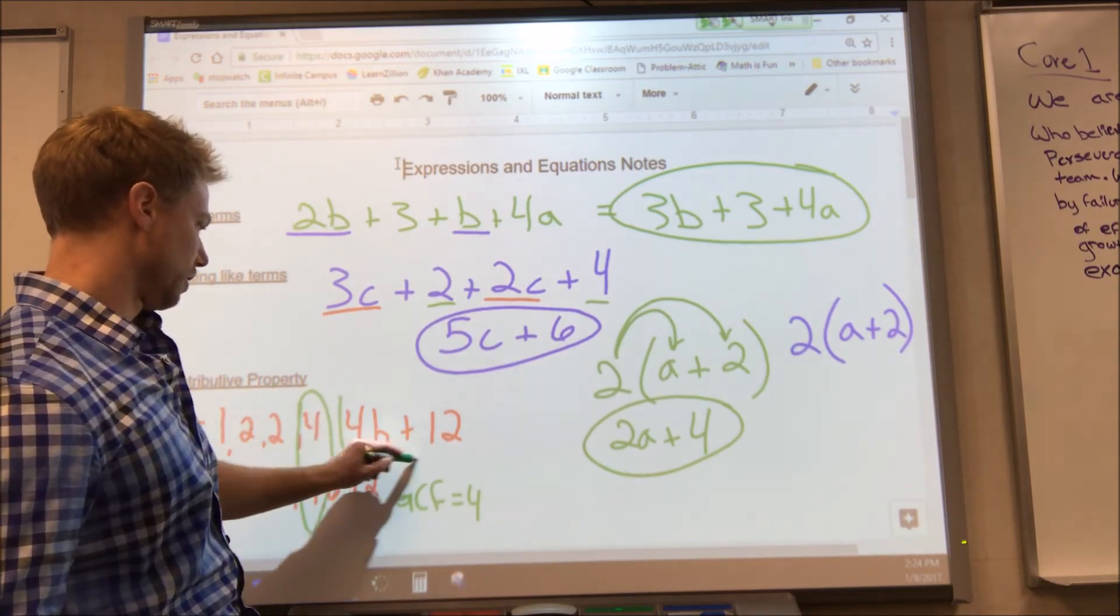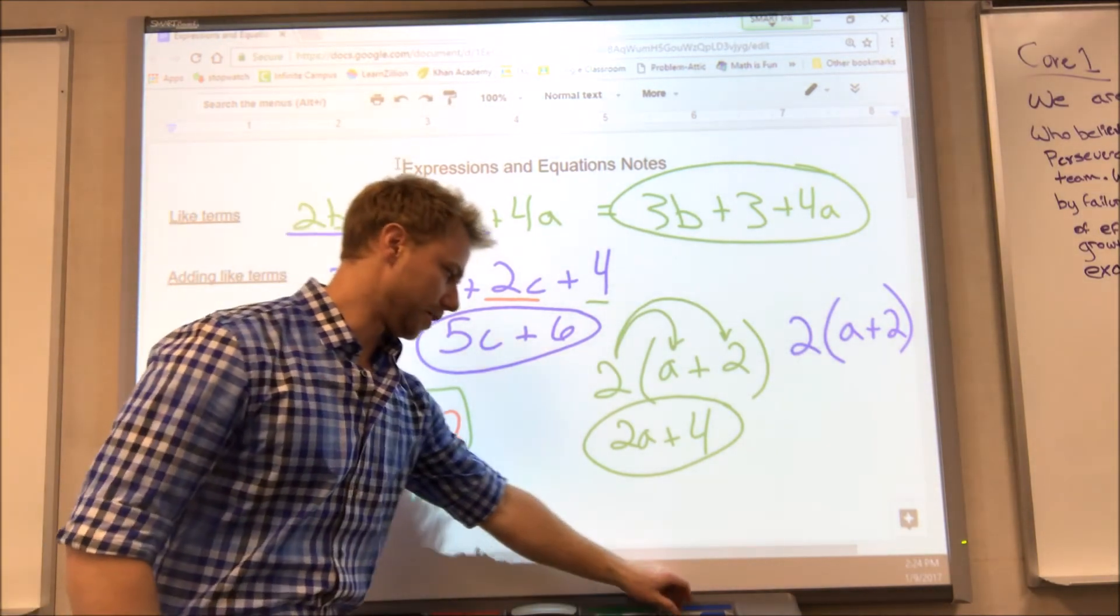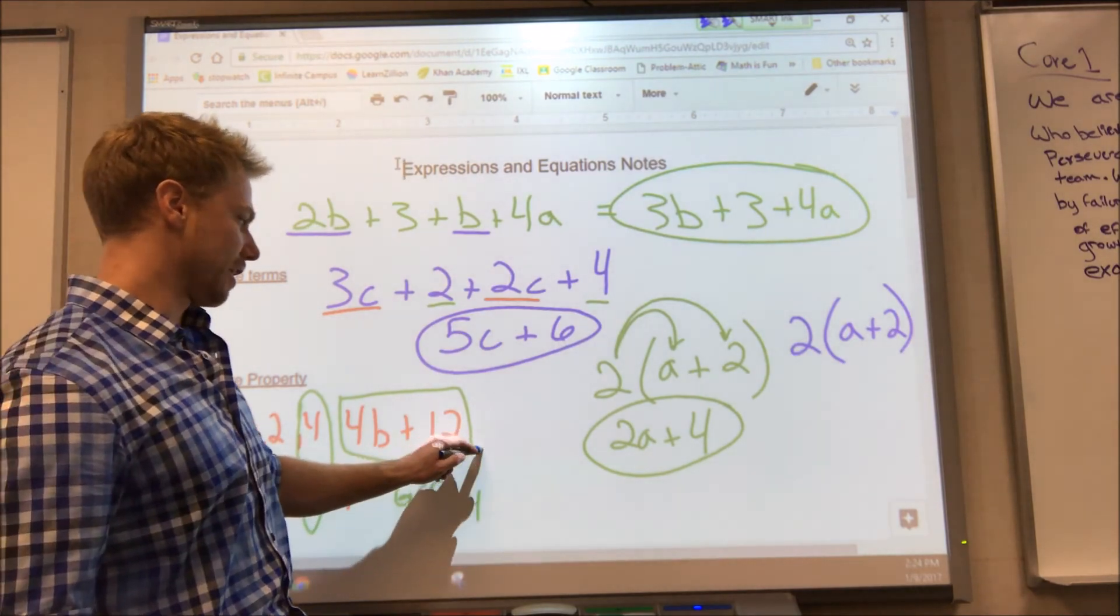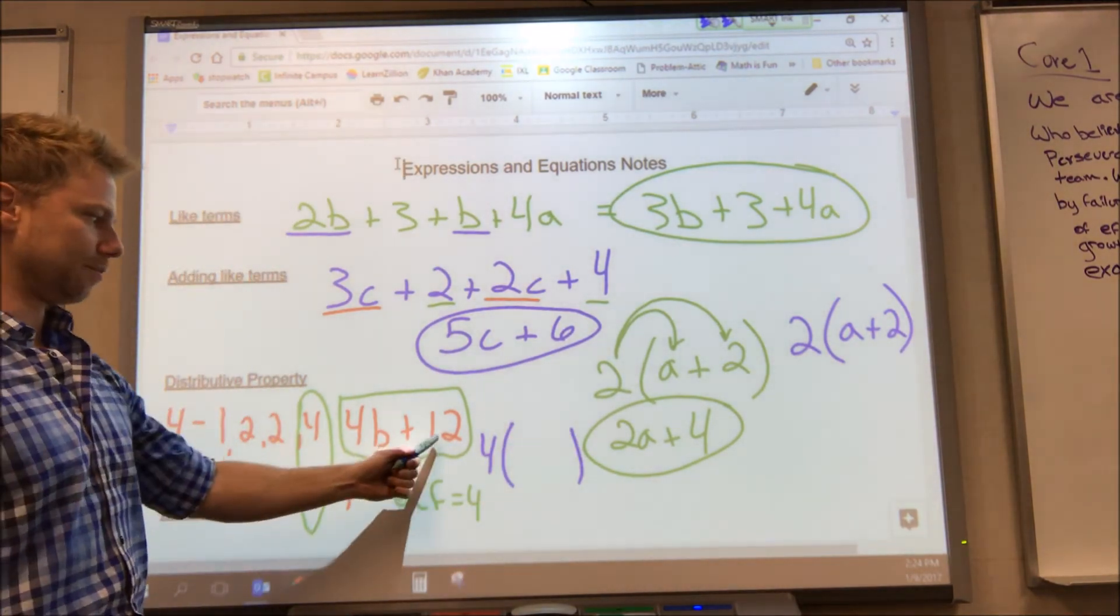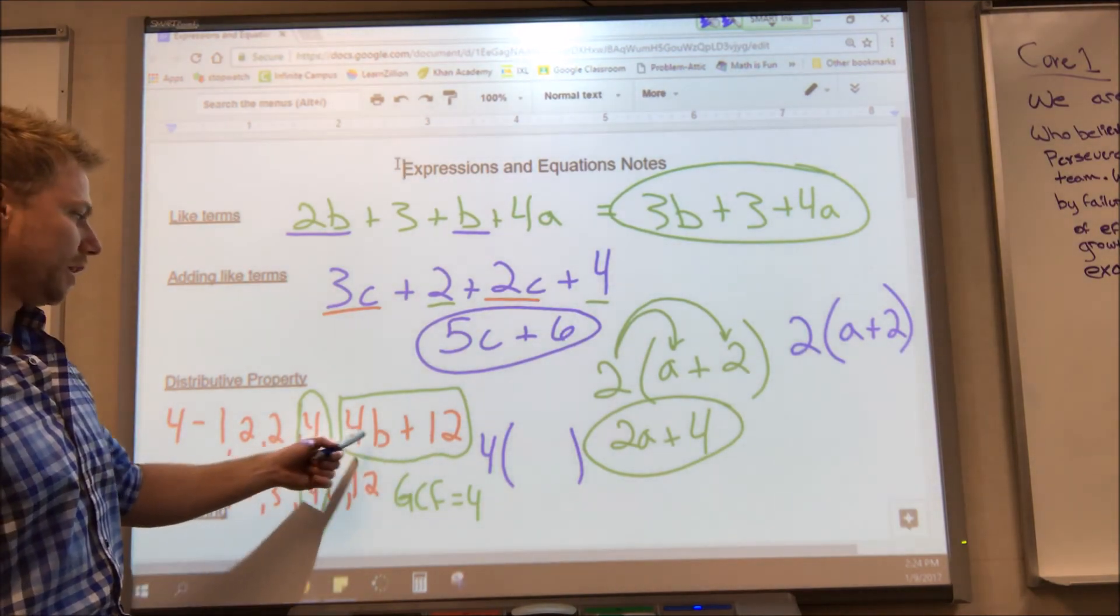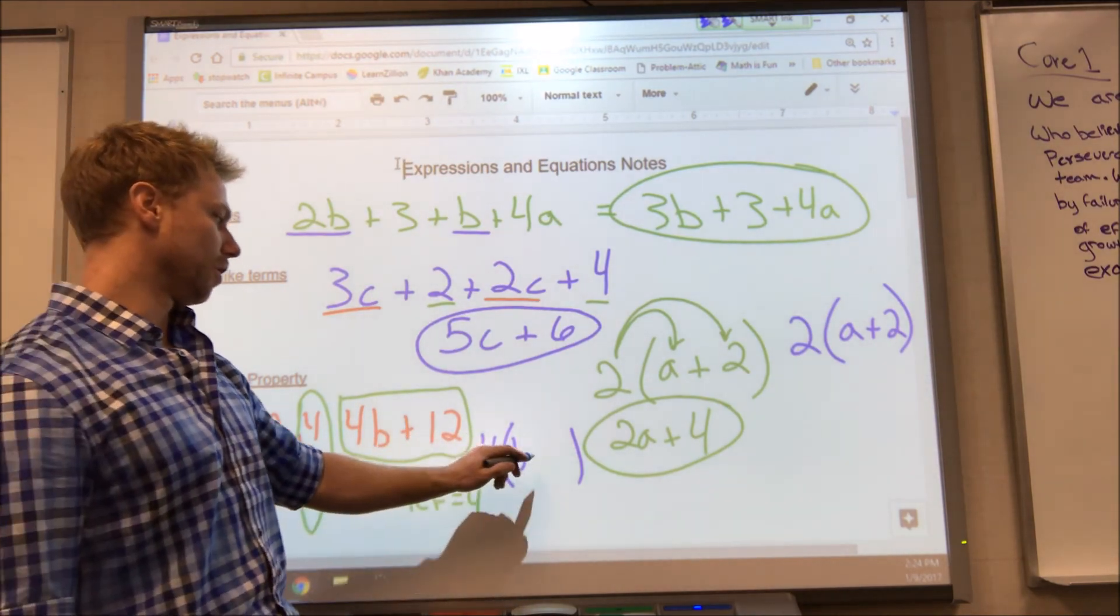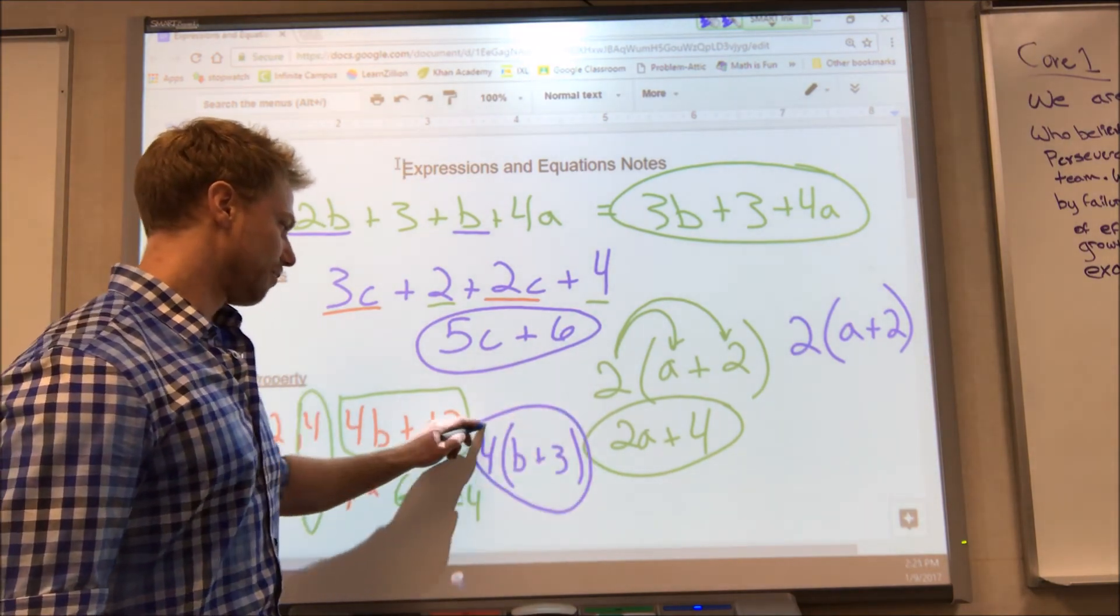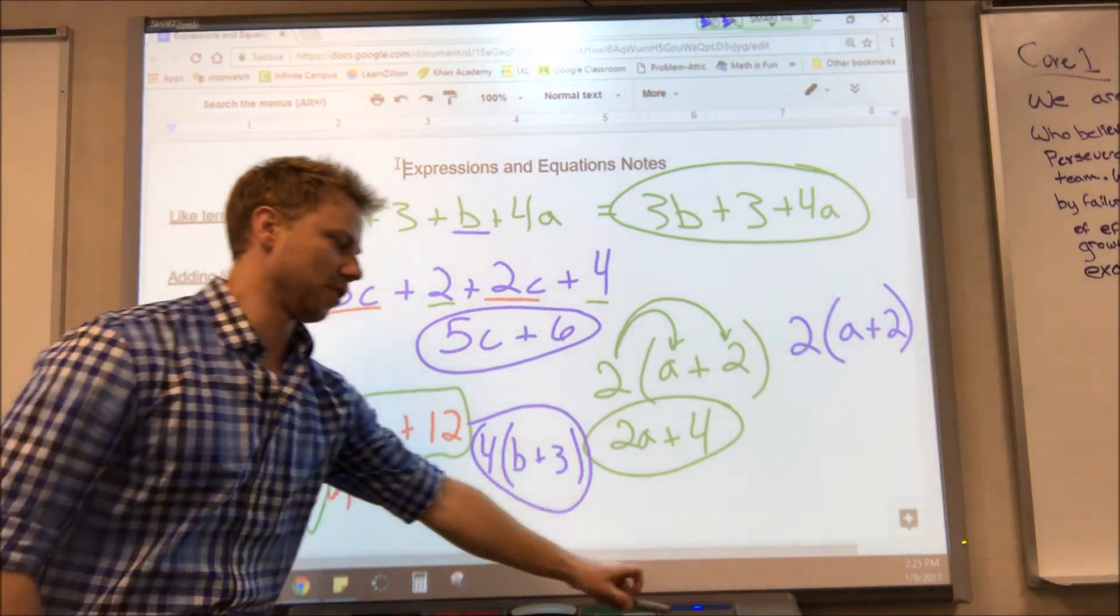This is our original problem. So what we're going to do is put our greatest common factor in front of the parentheses and then divide both of these terms by our greatest common factor. 4b divided by 4 is just b. 12 divided by 4 is 3. So after we factor, we get 4 times b plus 3. And that is all we can do.